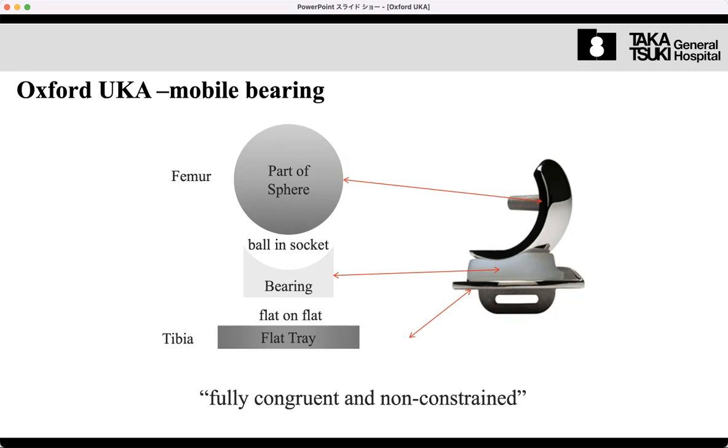We call this concept fully congruent and mobile bearing. That means anytime it provides the perfect contact area, the big contact area between femur and bearing. The bearing can move completely posterior.